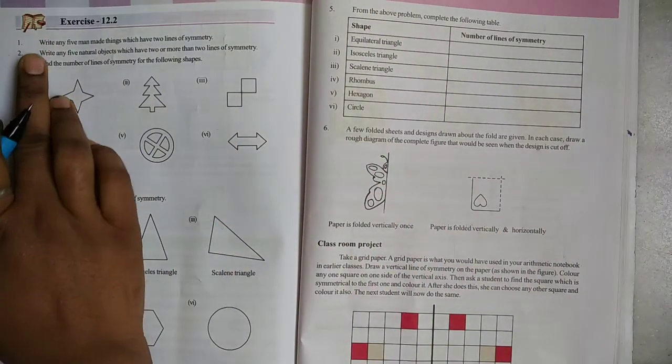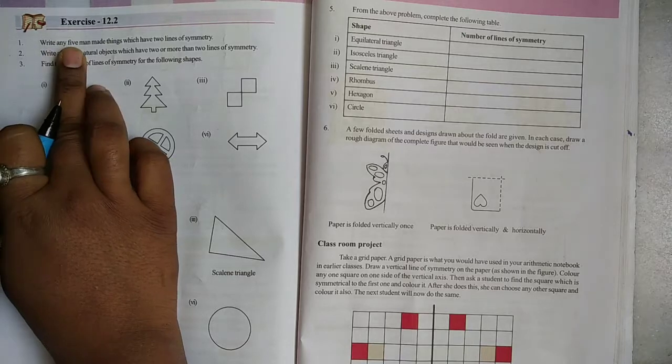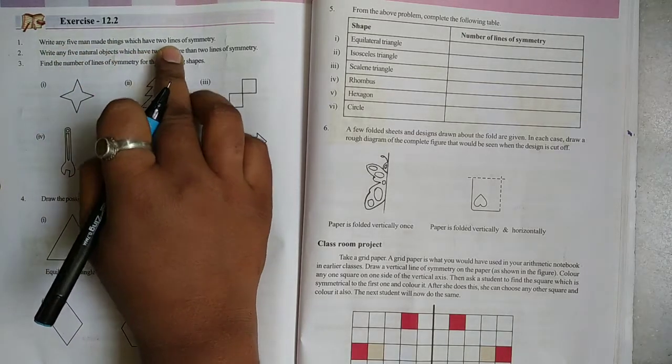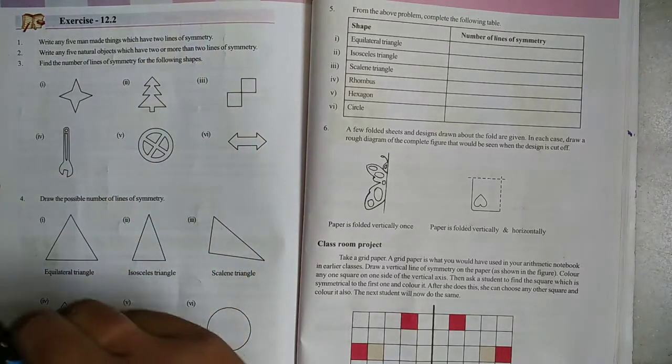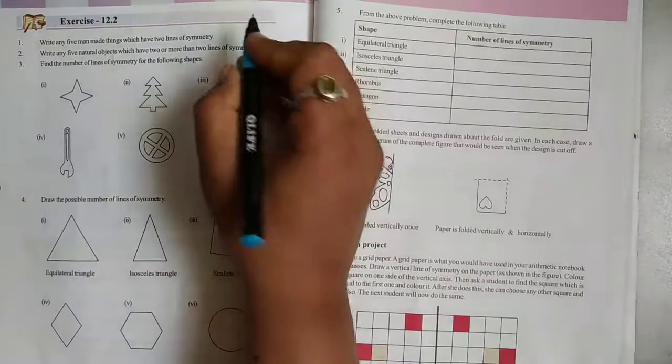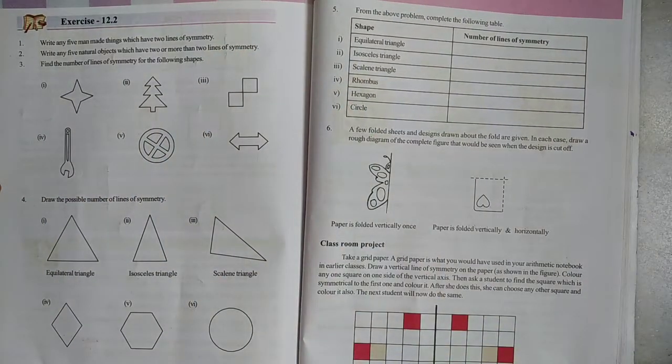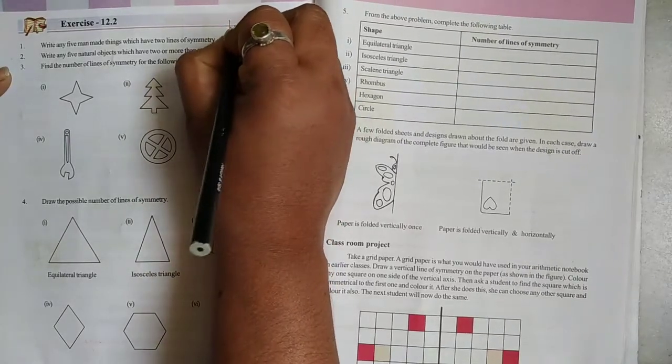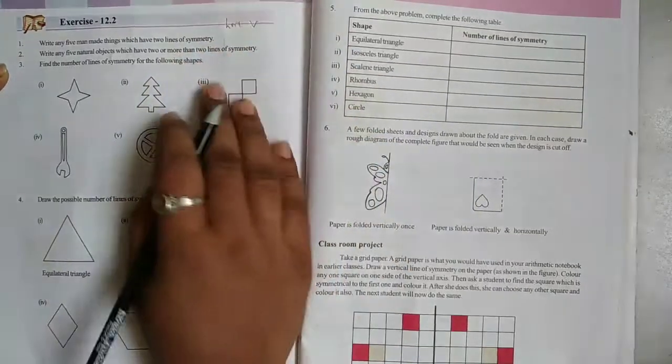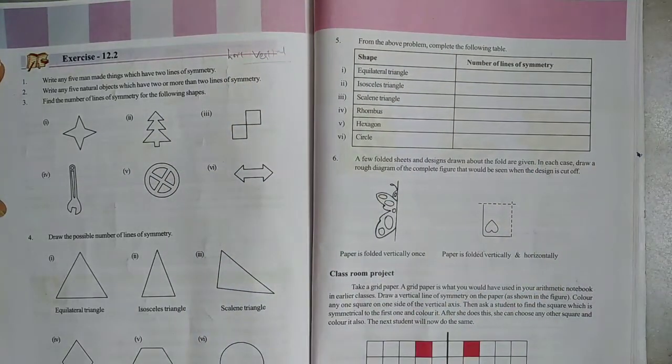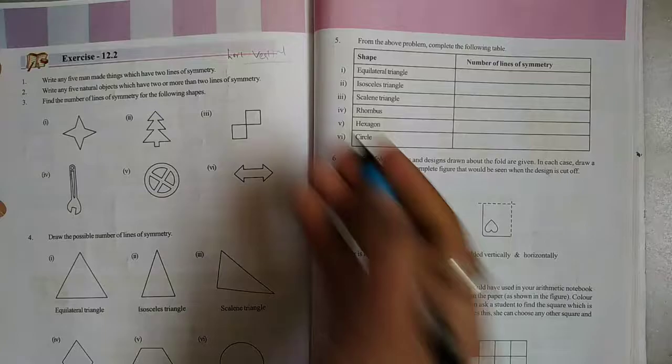Here is the first question: write any 5 manmade things which have 2 lines of symmetry. We need 5 things with 2 lines of symmetry, horizontal symmetry and vertical symmetry.